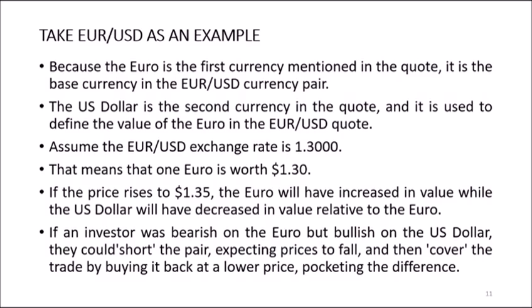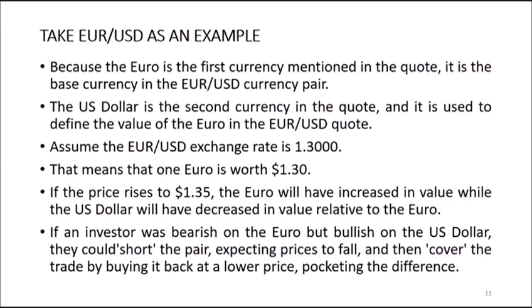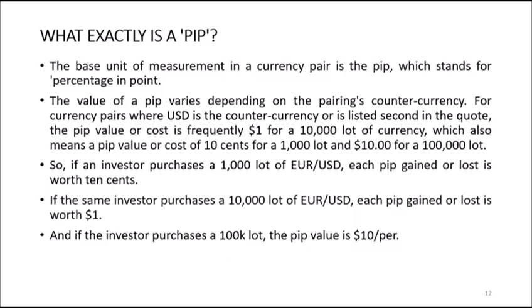Assume the EUR/USD exchange rate is 1.3000 — that means one euro is worth $1.30. If the price rises to 1.35, the euro will have increased in value while the US dollar will have decreased in value relative to the euro. If an investor was bearish on the euro but bullish on the US dollar, they could short the pair, expecting prices to fall and then cover the trade by buying it back at a lower price, pocketing the difference.